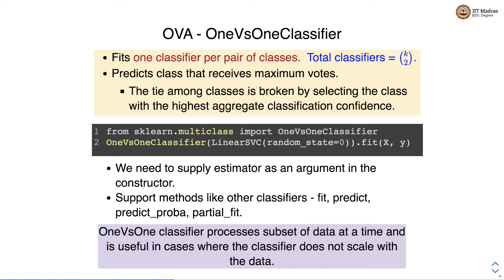One versus one classifier fits one classifier per pair of classes, so the total number of classifiers equals kC2. At prediction time it selects the class that receives the maximum votes, with ties broken by the highest aggregate classification confidence. We import OneVsOneClassifier from sklearn.multiclass and supply the estimator as a constructor argument. It supports fit, predict, predict_proba, and partial_fit. OneVsOneClassifier processes a subset of data at a time, making it useful when the base classifier does not scale well with data size.